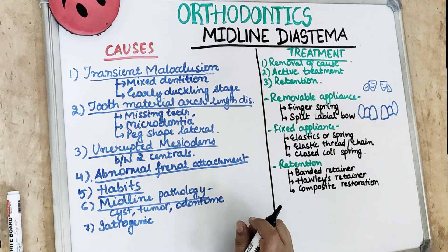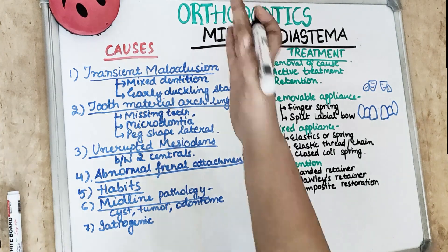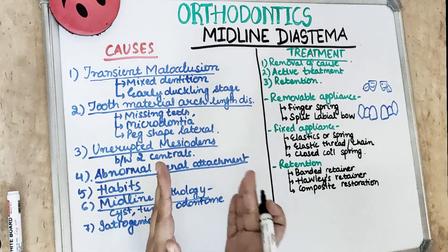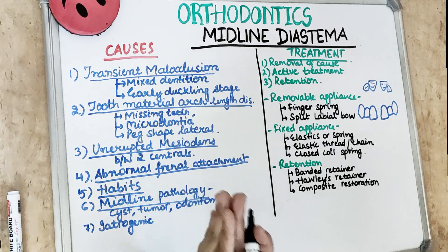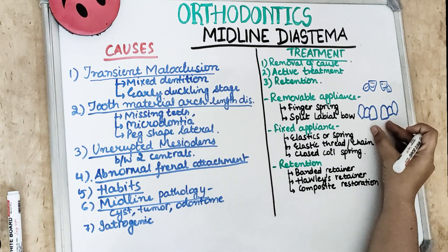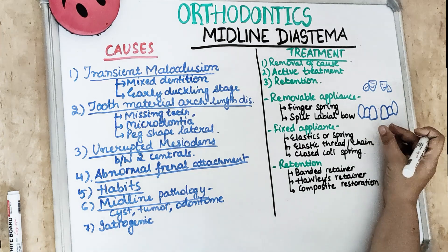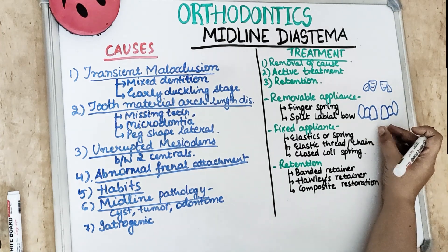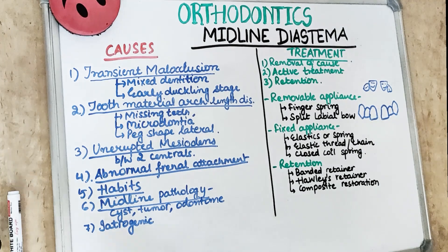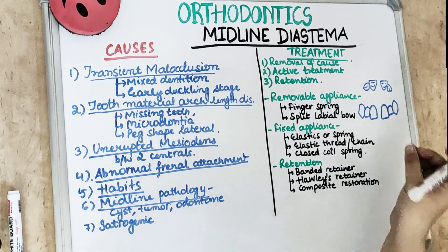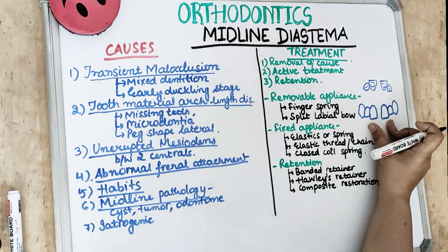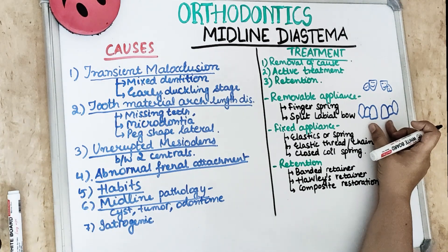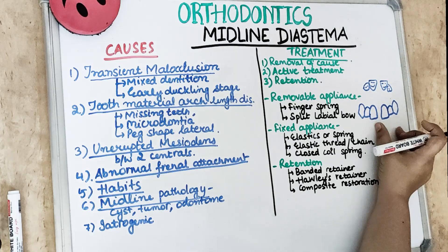Midline diastema is the spacing present in the midline — anteriorly in the maxilla, between the two maxillary central incisors. This malocclusion is easy to treat but difficult to retain, because when you close the space, it opens again automatically after orthodontic treatment. So this is a challenging treatment.